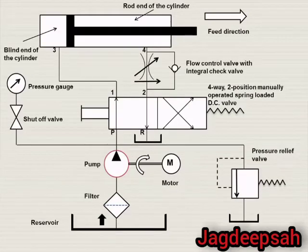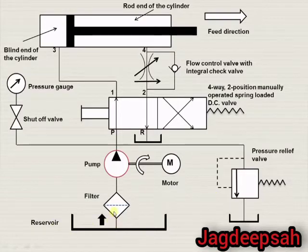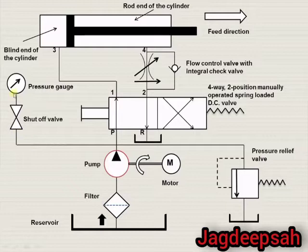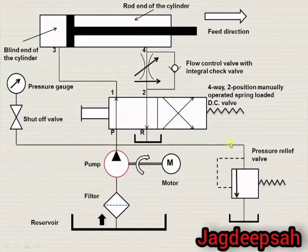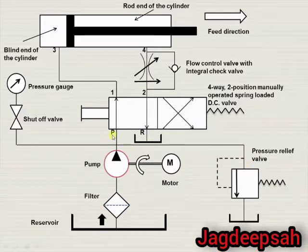These are the various components of the hydraulic circuit. As you can see, there is a reservoir; from the reservoir liquid enters into the filter, then it enters into the pump which is driven by an electric motor. Then there is a shut-off valve and pressure gauge which will indicate the pressure within the circuit. Then we have the pressure relief valve which takes care of excess pressure and restores the system back to design pressure. This is the pump port P and this is the reservoir port R.